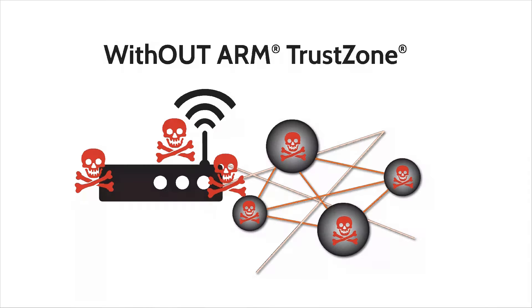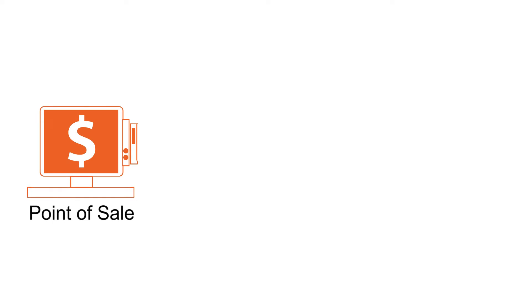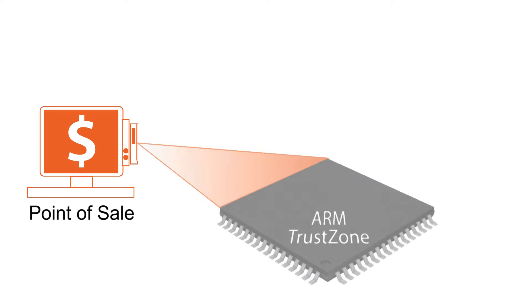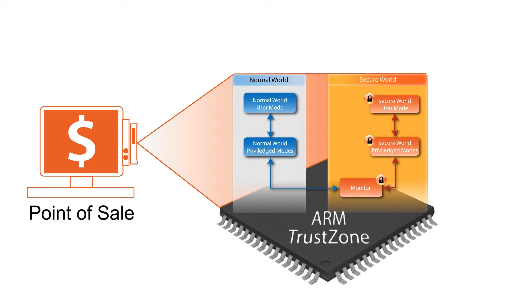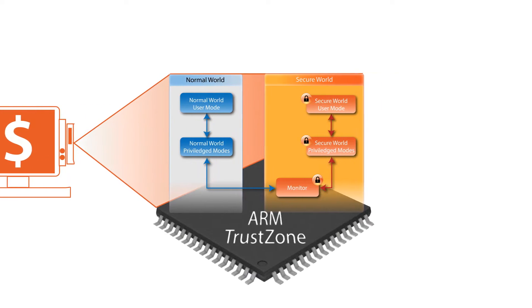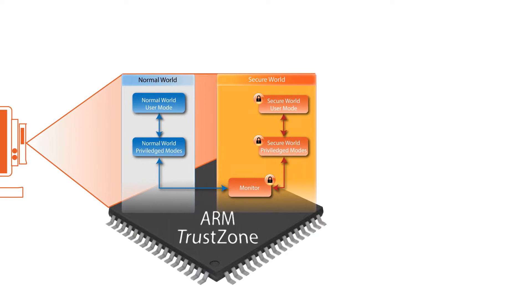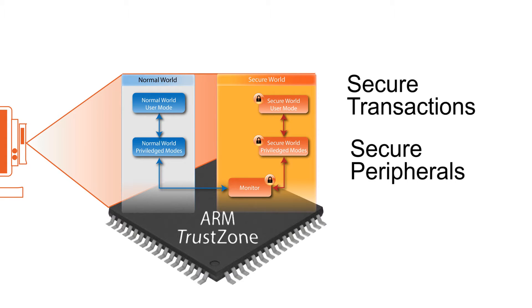TrustZone provides a secure processing domain called the Secure World, one that is physically isolated by hardware from the normal world that runs a rich operating system like Android or Linux. This Secure World extends beyond the CPU, its memory, and software to include secure transactions on a bus, interrupts, and peripheral functions within a chip.